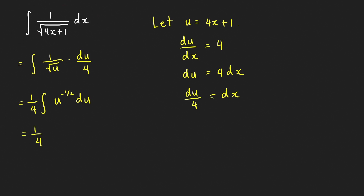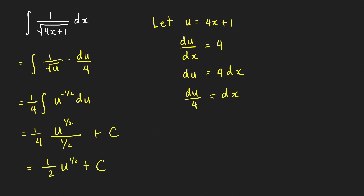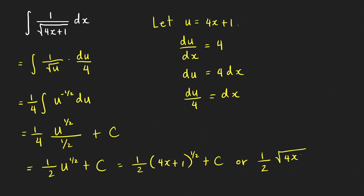Applying the power rule: one-fourth times u raised to negative one-half plus 1, which is u raised to one-half, divided by the new power one-half, plus c. Simplifying: 4 times one-half is 2, so this becomes one-half u raised to one-half plus c. Substituting back, we get one-half times the quantity 4x plus 1 raised to one-half plus c, or written as a radical: one-half times the square root of 4x plus 1, plus c. That's all for this lesson. Thanks for watching and hope to see you next time.